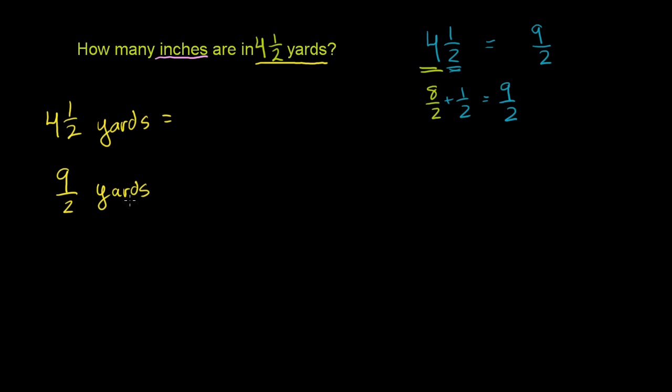So to convert it into feet, we just have to remember that there are 3 feet for every 1 yard. So let me write that down. There are 3 feet per yard. And if we were to multiply 9 halves yards times 3 feet, this yard would be in the numerator. It would be divided by this yard, and they would cancel out.